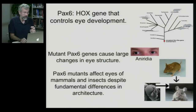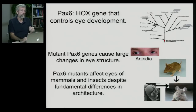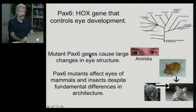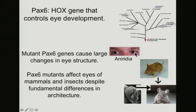There is a particular Hox gene called Pax6 that is interesting in terms of our discussion of the eye. Even though we allowed for the possibility of the eye to evolve through 1,800 small steps, maybe there were a few larger changes that occurred. We know that a mutant in the Pax6 gene can cause very large changes in eye structure. This individual has no irises — that's the pupil all the way out to the edge of what would be the iris — and that's caused by a mutation in the Pax6.